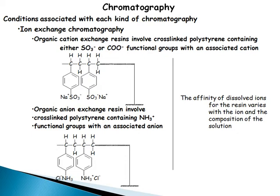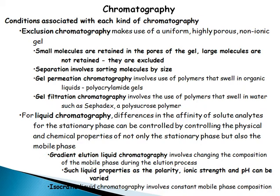Exclusion chromatography makes use of uniform, highly porous, non-ionic gels. Small molecules are retained in the pores of the gel, while large molecules are not retained — they are excluded. Separation involves the sorting of molecules by size. Gel permeation chromatography uses polymers that swell in organic liquids, such as polyacrylamide gel. Gel filtration chromatography uses polymers that swell in water, such as Sephadex and polysucrose polymers.